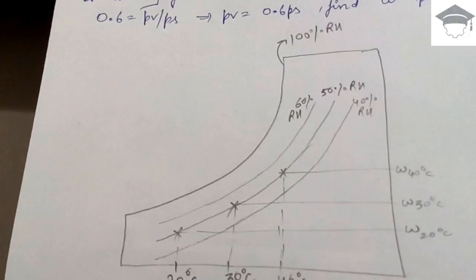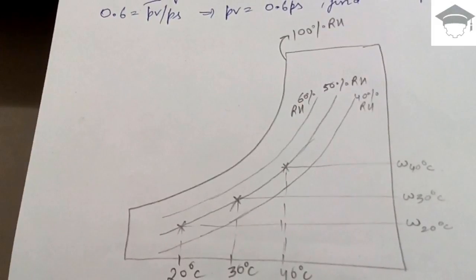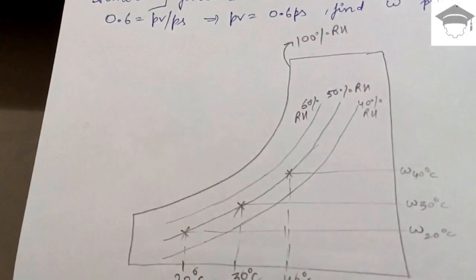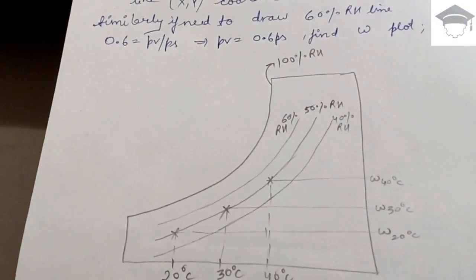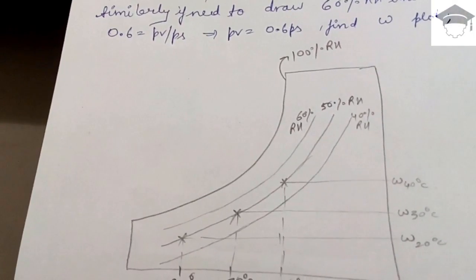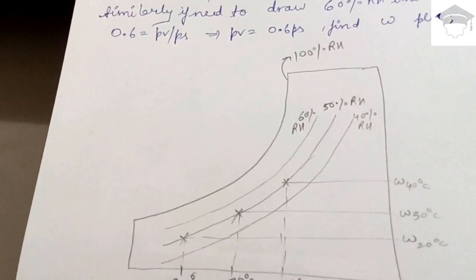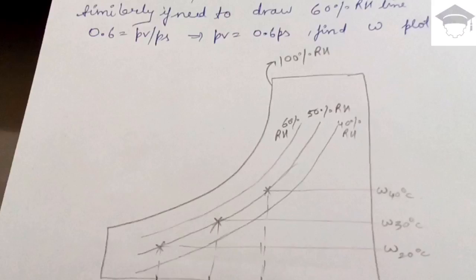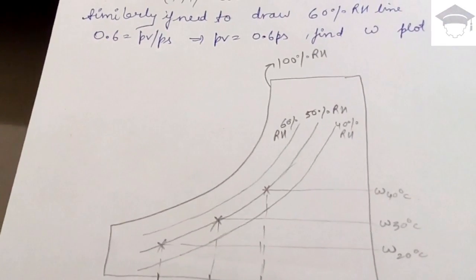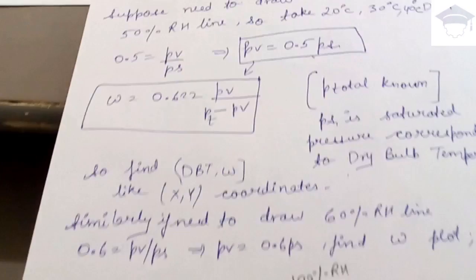Similarly, to draw 60% RH, 40% RH, or 30% RH lines, use the formula φ = PV / PS with the respective phi value — for example, put φ = 0.6 for 60% RH to get PV = 0.6 × PS. Then find omega, locate the DBT and omega coordinates, plot the points, and join with a smooth curve to represent the relative humidity line.